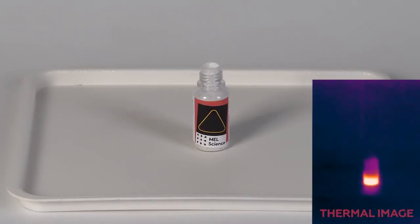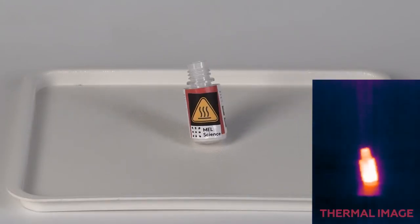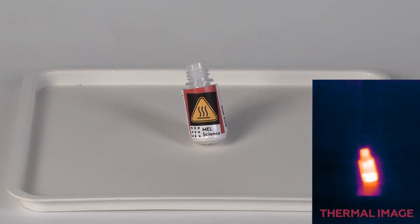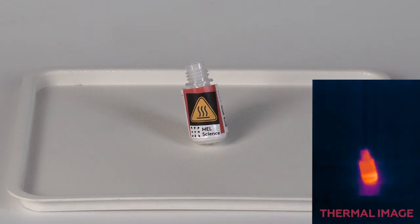Calcium oxide and water react to form calcium hydroxide. As a result of this reaction, a great amount of heat evolves. The temperature increases so much that the plastic bottle crumples and the thermosticker changes its color.